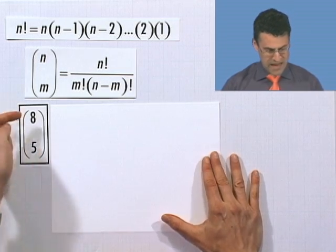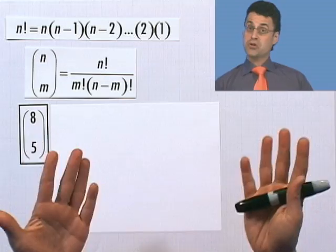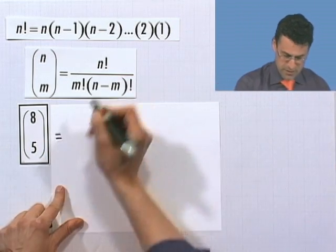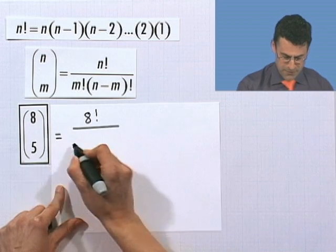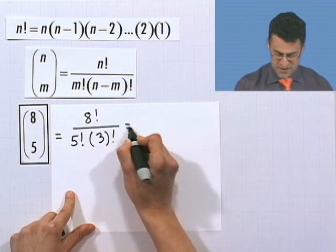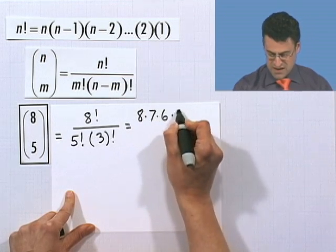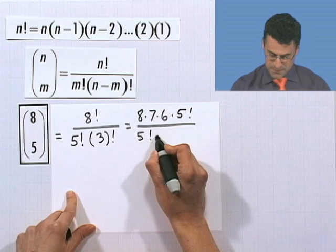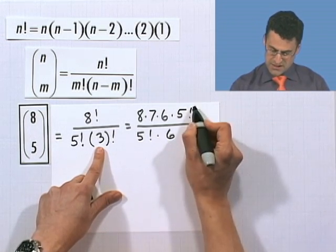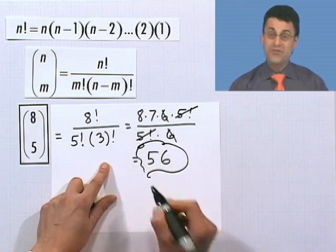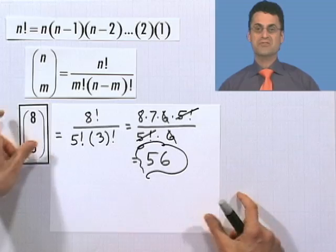Let's try a bigger one: 8 choose 5. If I have 8 things, how many different ways are there to pick 5 of them? By the formula, it's 8 factorial divided by 5 factorial times 3 factorial. This equals 8 times 7 times 6 times 5 factorial, divided by 5 factorial times 6. The 5 factorials cancel, the 6 cancels, and I'm left with 8 times 7, which is 56. So there are 56 different ways of picking 5 things from 8.